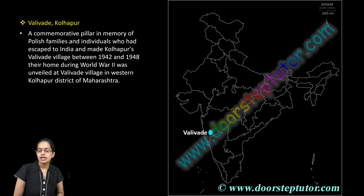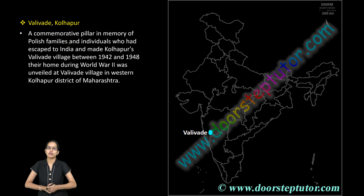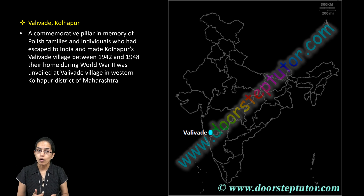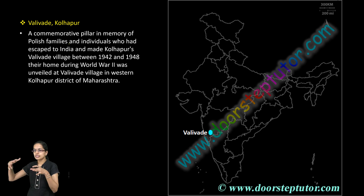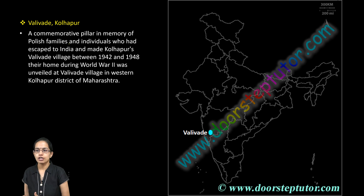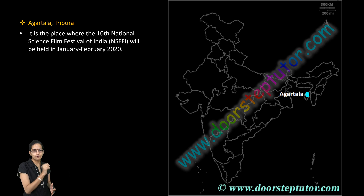The next is Balivad, which lies in Kolhapur. Kolhapur in Maharashtra is a special place where various structures have been built by Polish people — those who escaped to India made Balivad their village. Therefore, they have very important significance since World War II, and a unique cultural significance is seen in this region of Kolhapur.